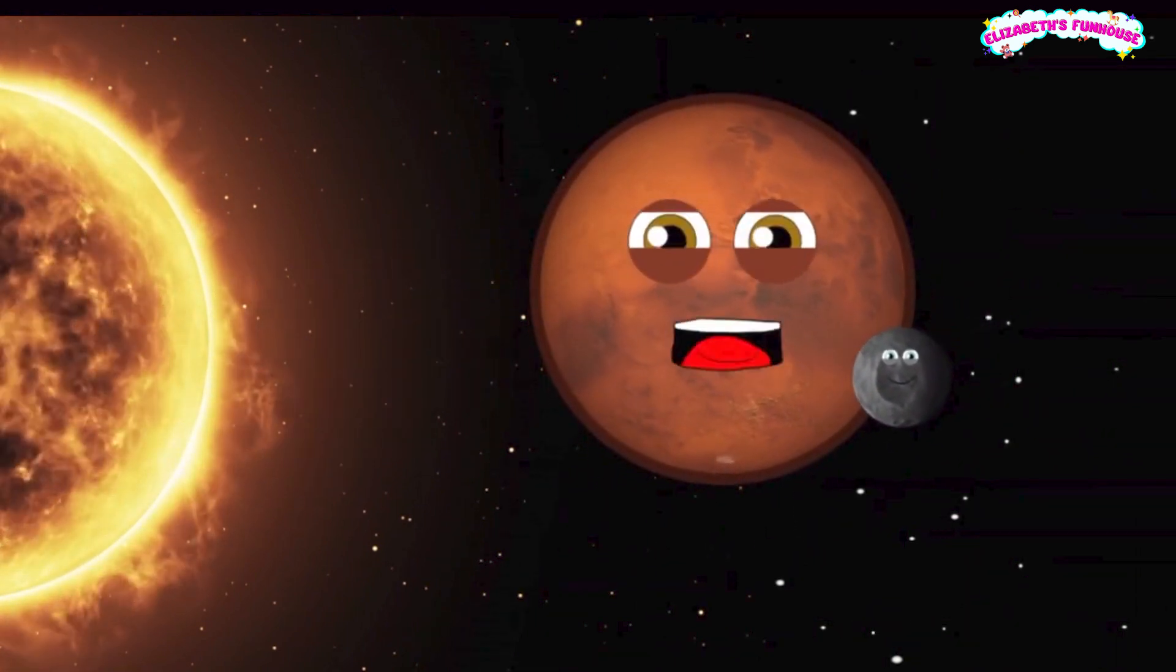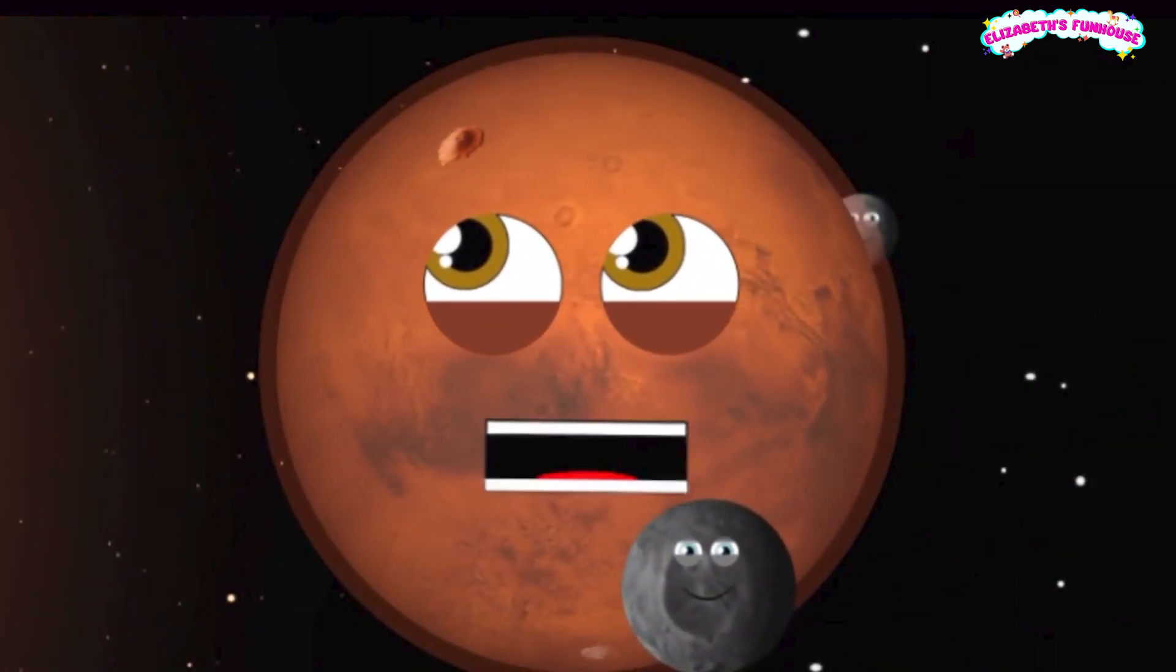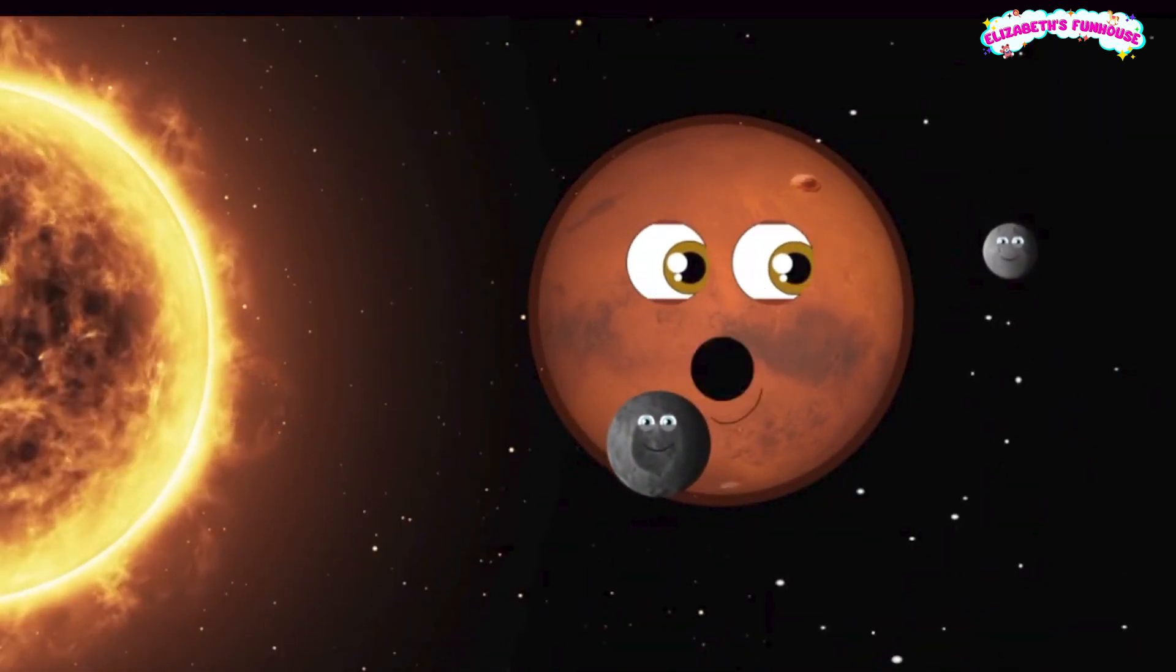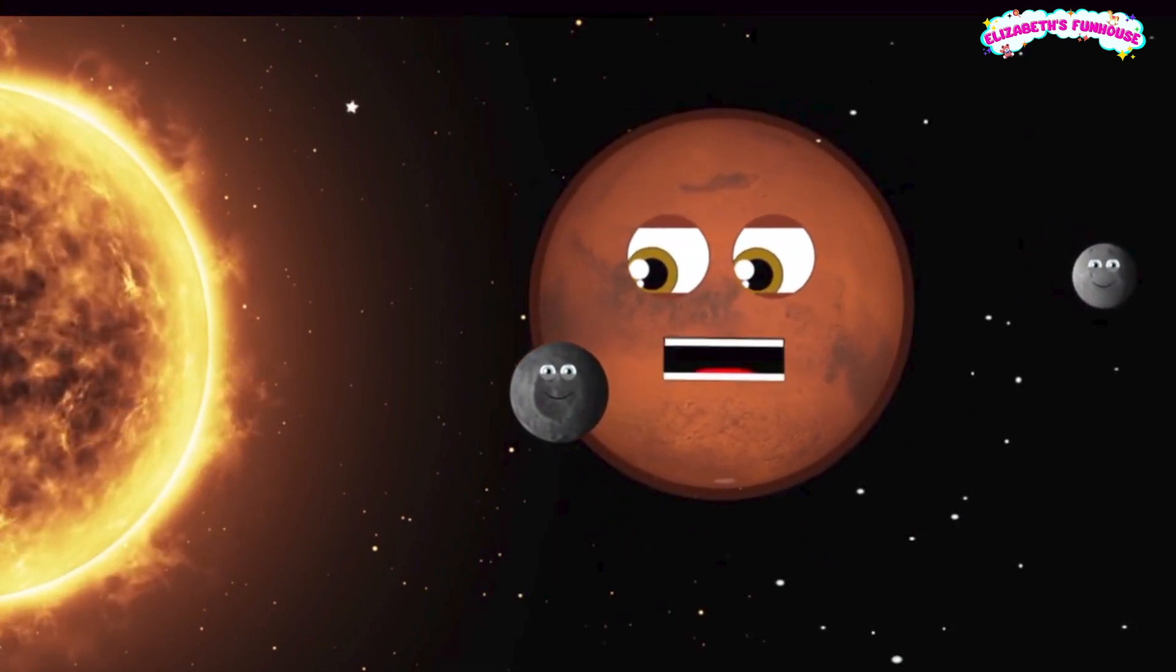I'm the second smallest planet in our solar system. I have the tallest mountain named Olympus Mons. It's the biggest volcano in our whole system. Phobos and Deimos are my two moons. Phobos is the larger of the orbiting two.